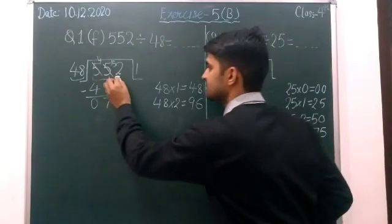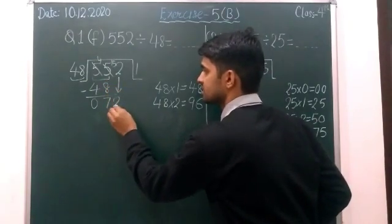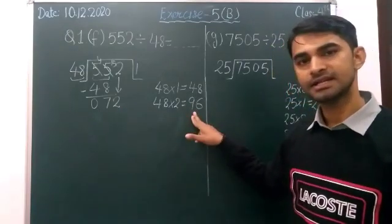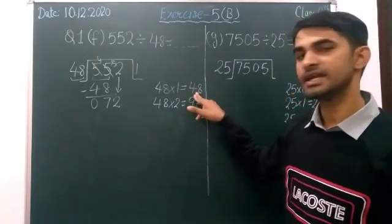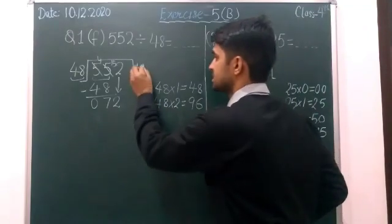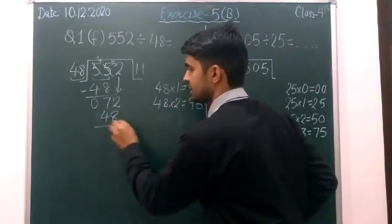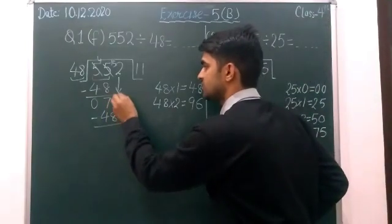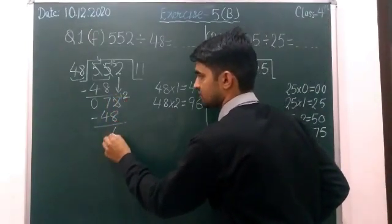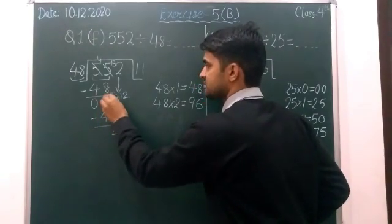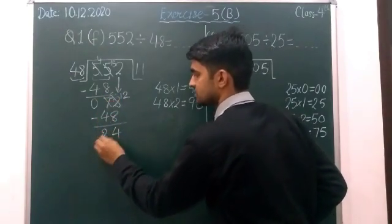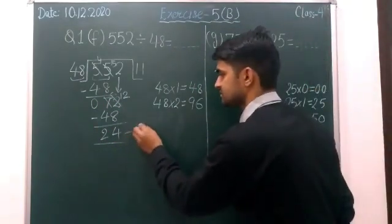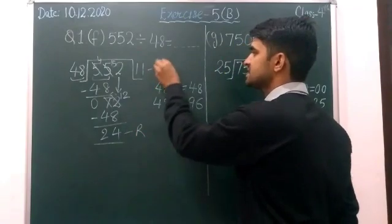Okay now next we will take 2, 72 it becomes. So again 72 is smaller than 96 so we will take 48 ones are 48, 48 ones are 48. Now again subtract 12 minus 8, 4 become 6, 6 minus 4, 2. Okay finally 24 is remainder and 11 is quotient.